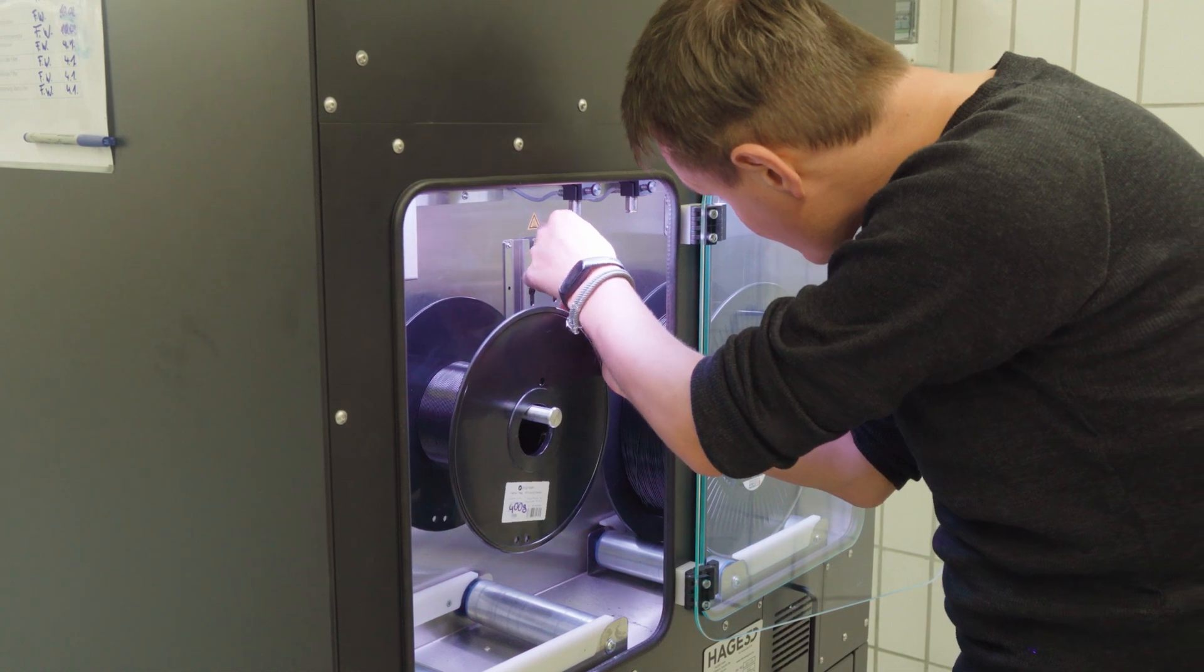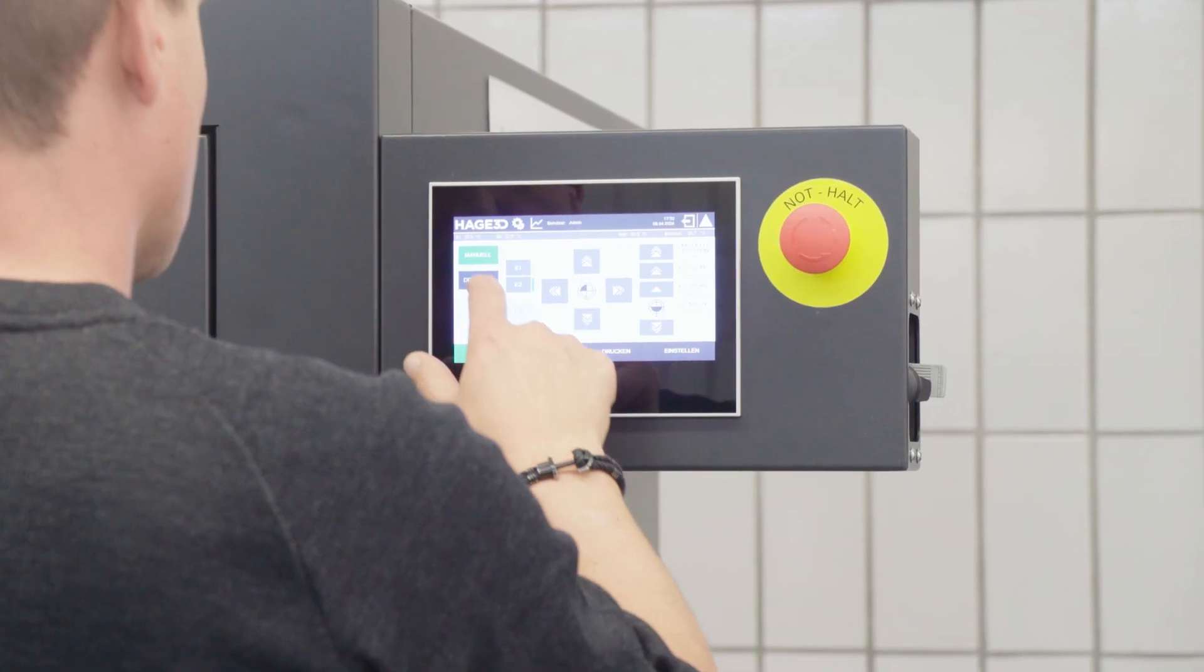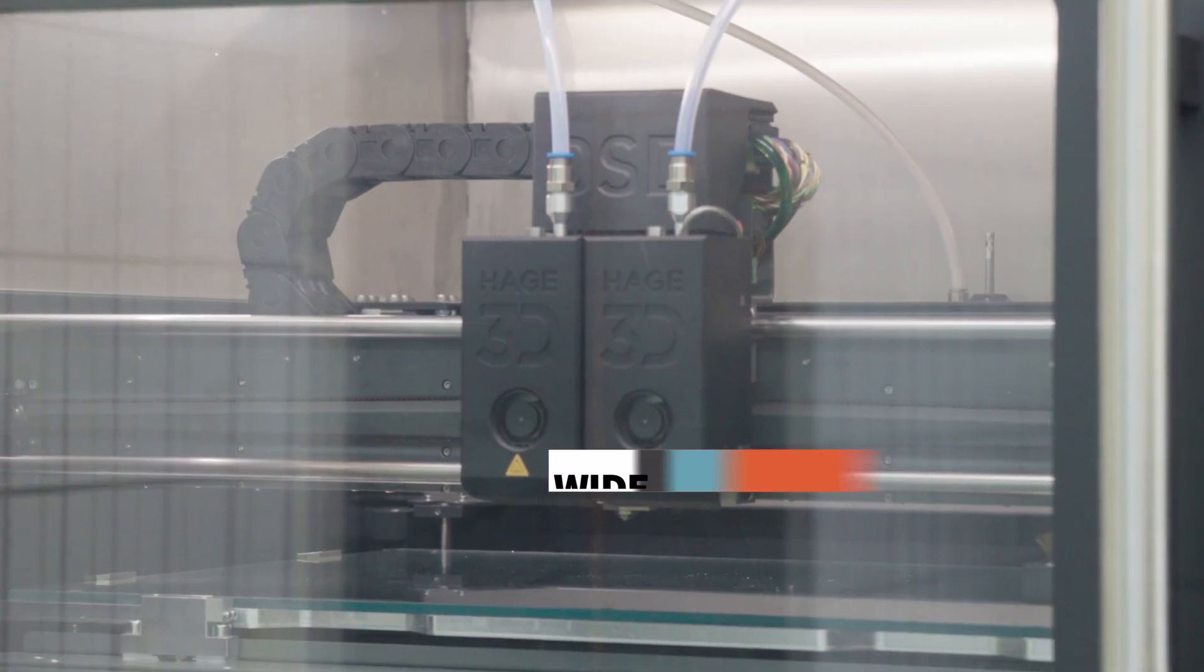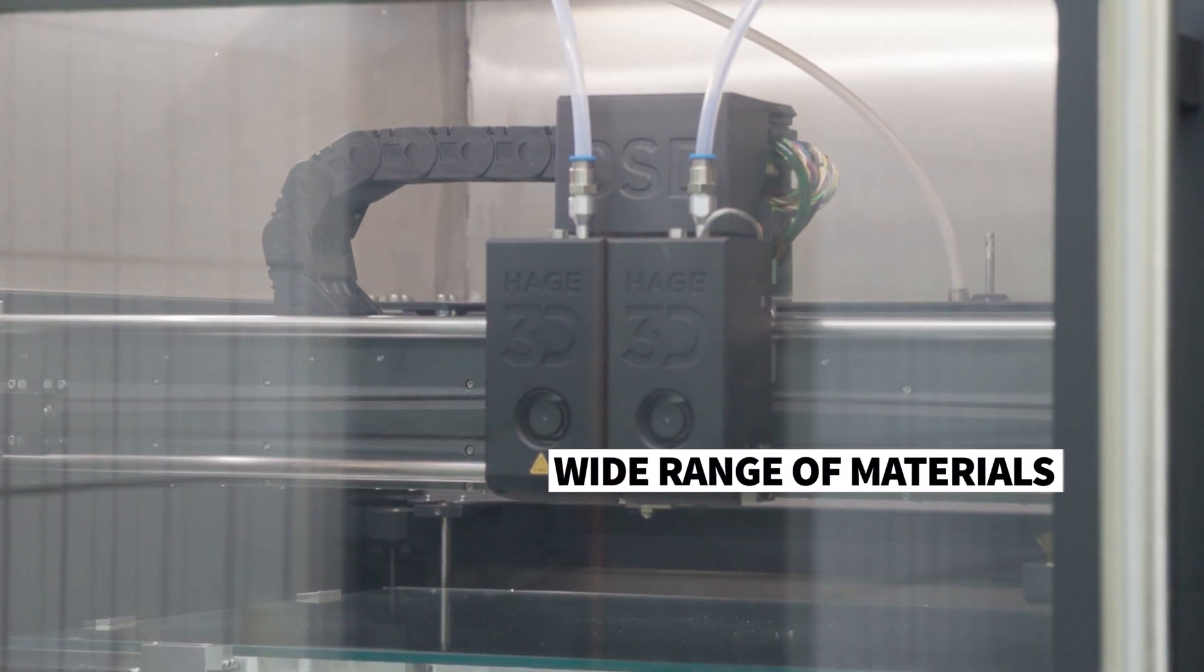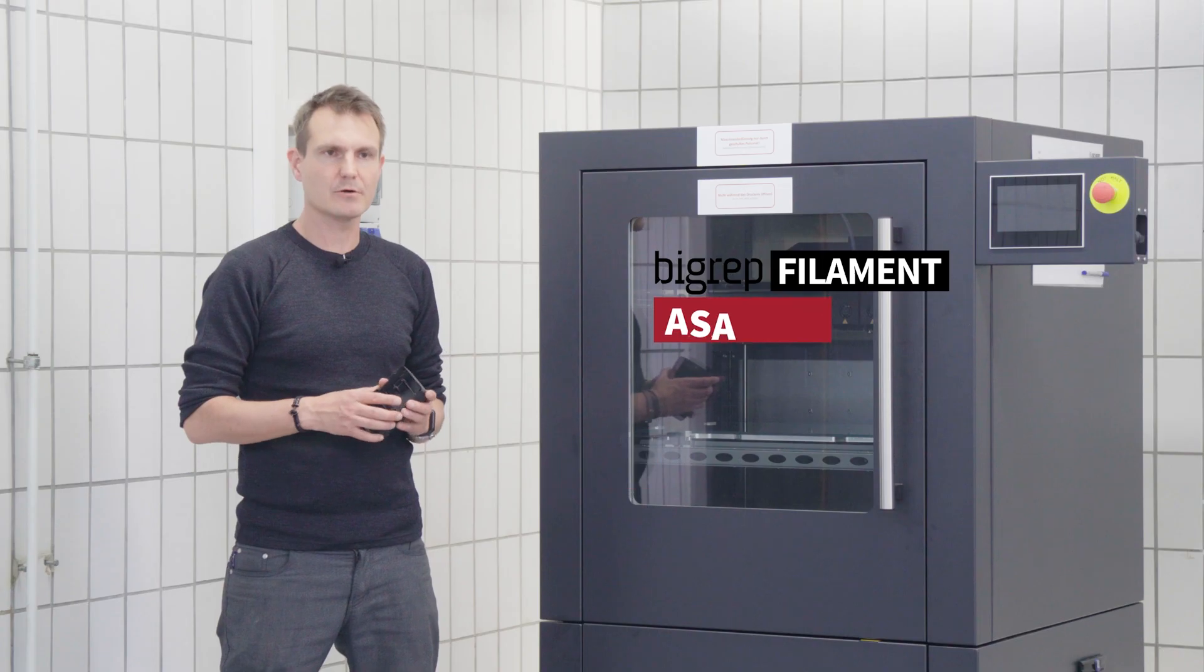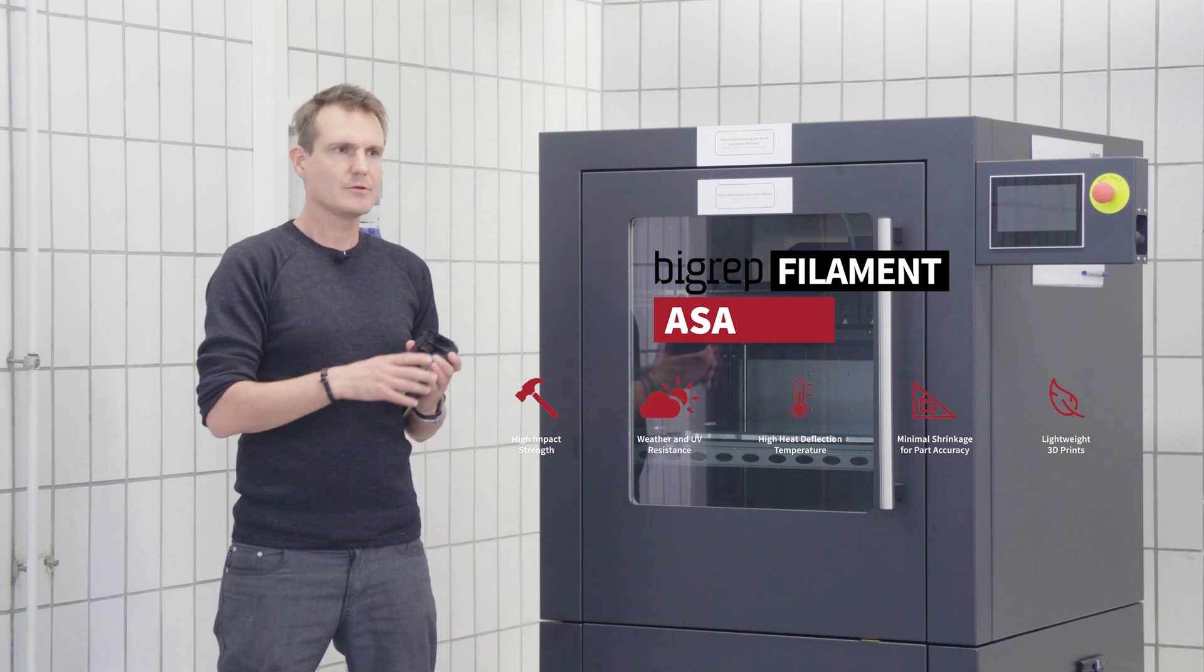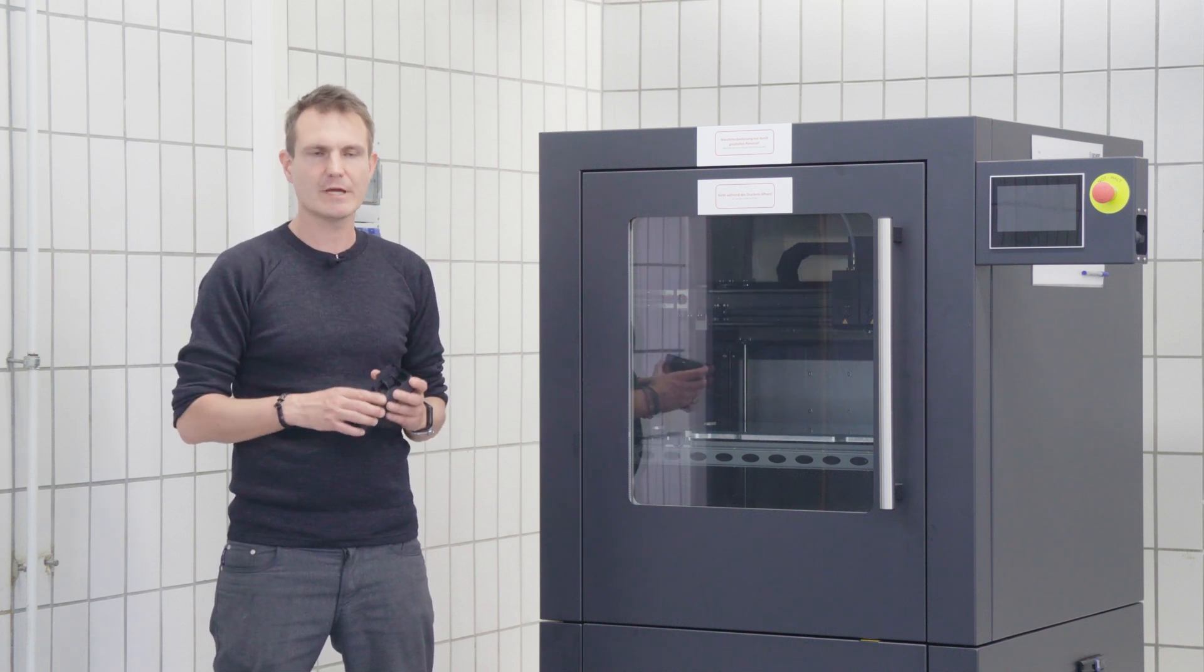One challenge we faced in choosing the right 3D printer was which material the printer could print. Therefore, we want to have a wide range. So we print most of the time with ASR because it has good environmental resistance. You can use it outdoor. The temperature range is good.